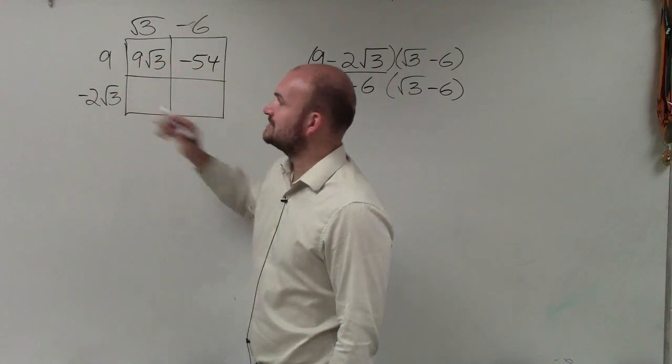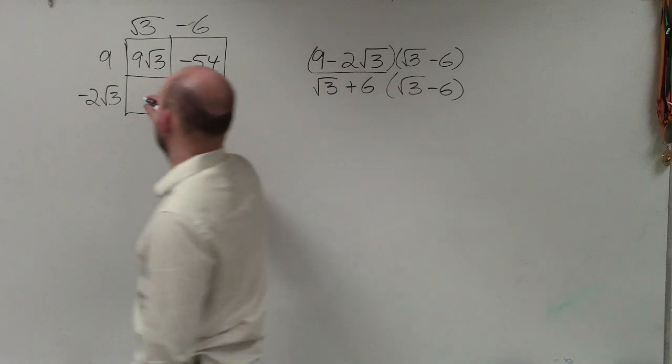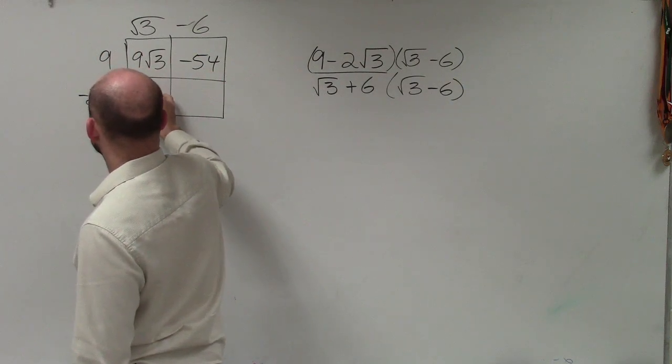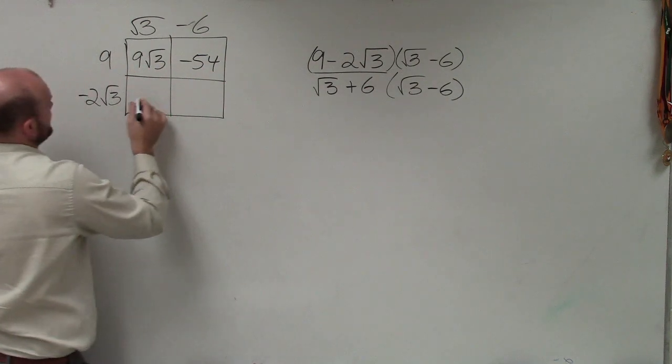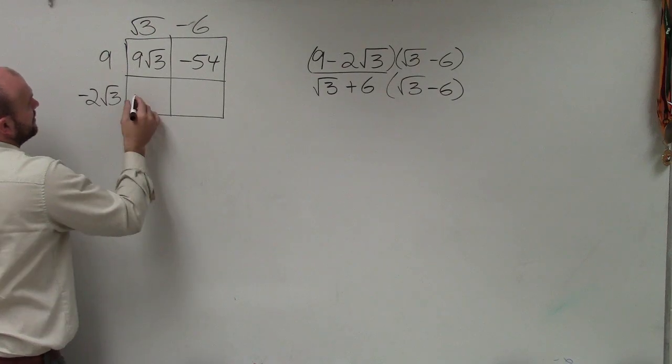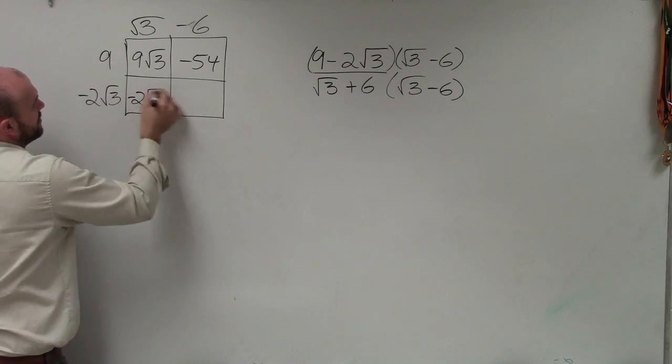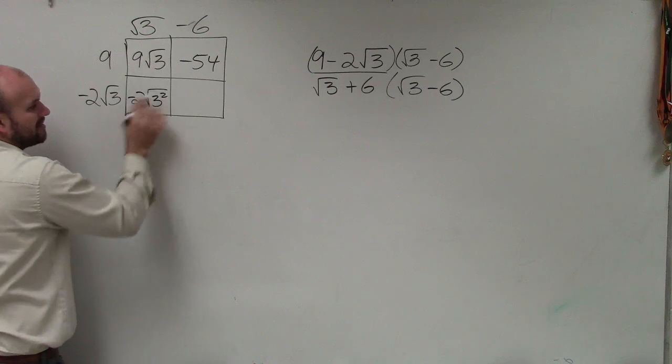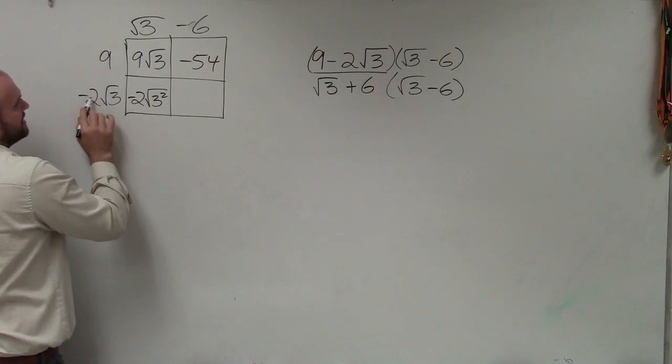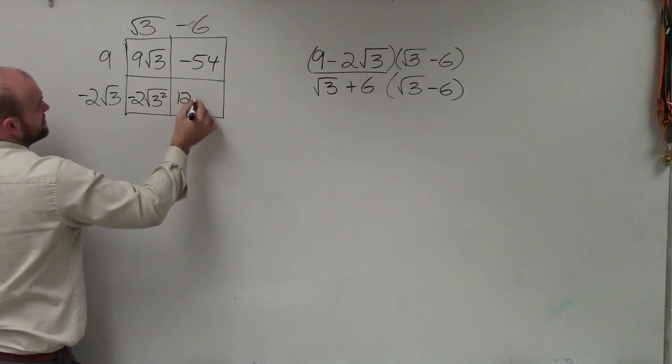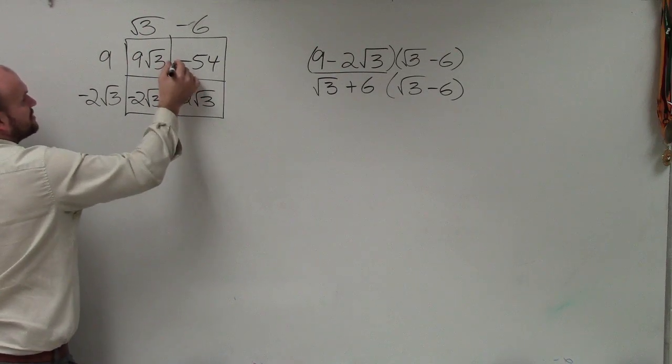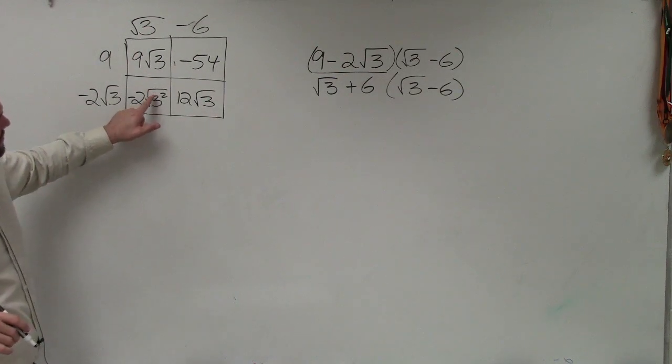Square root of 3 times negative square root of 3 is going to be negative 2 square root of 3 squared. I'm going to simplify this in a second. Negative 2 times square root of 3 times negative 6 is going to be a positive 12 square root of 3.